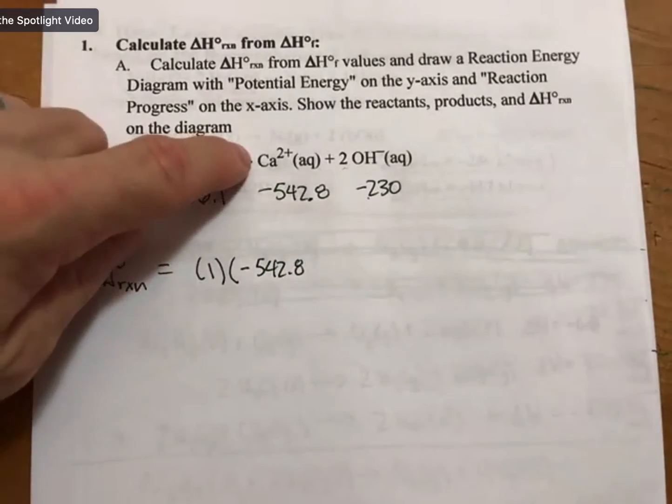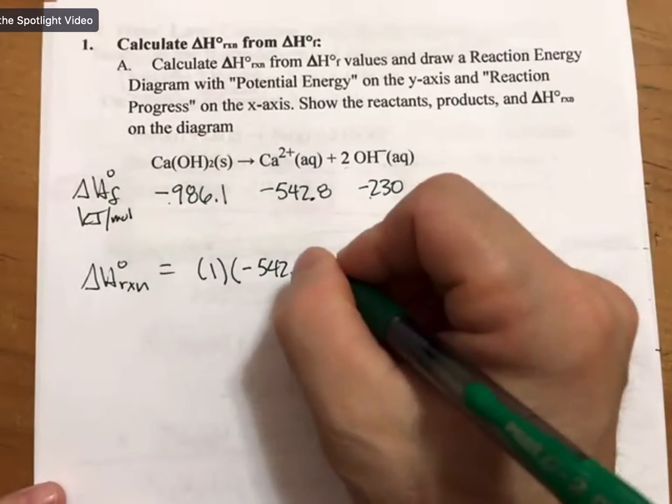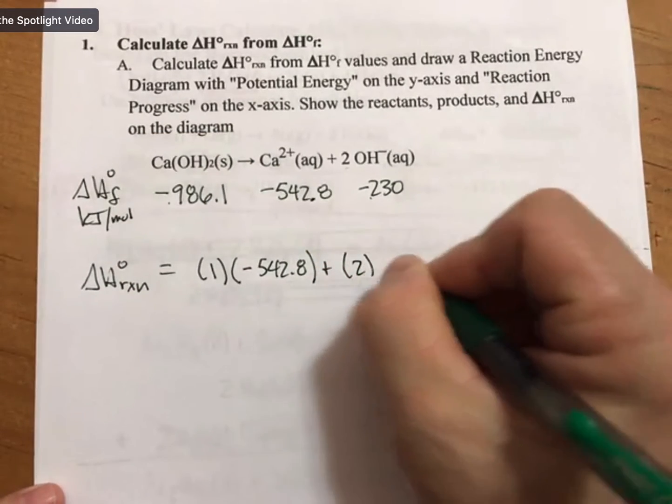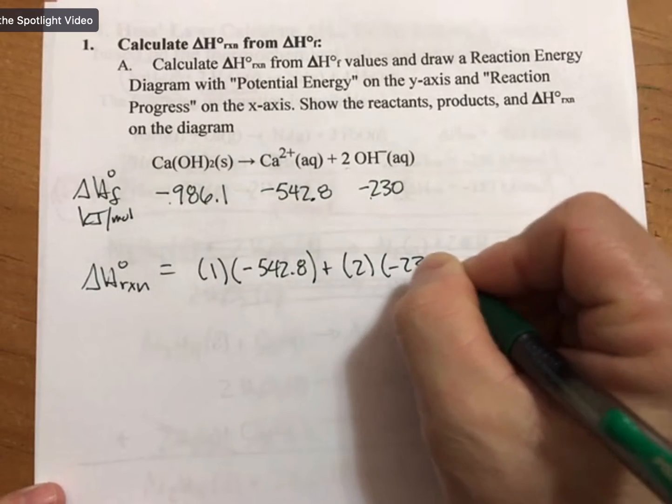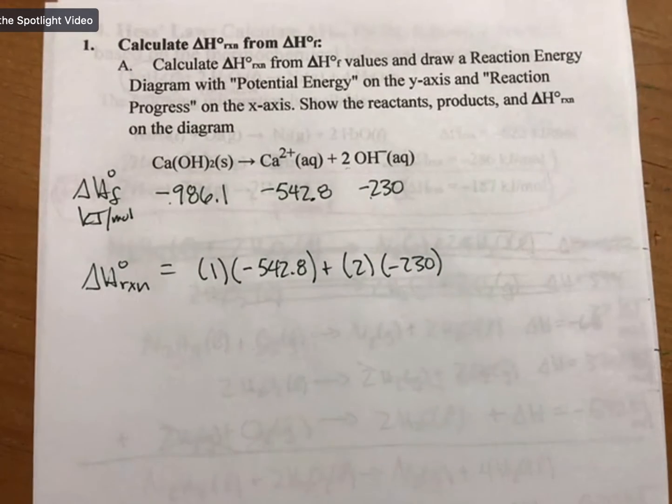So one times -542.8 plus two times -230.